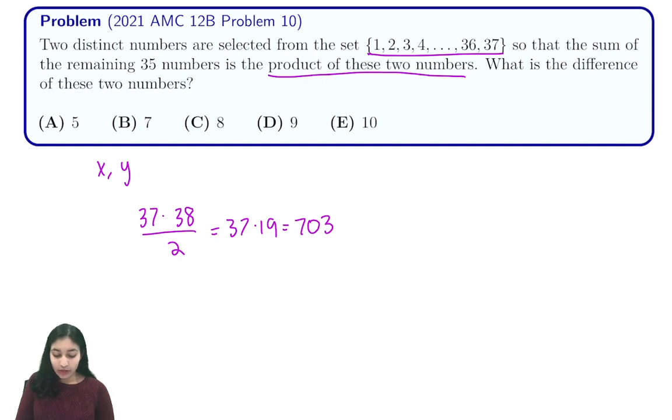So from here we know that 703 minus x minus y is equal to the product of x and y, so you can write it like this.